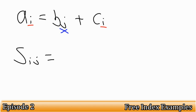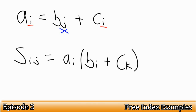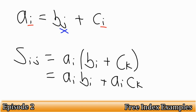S_ij = a_i(b_i + c_k) — this also makes no sense. When we expand the brackets, we get a_i*b_i + a_i*c_k, where i appears twice in one term but appears once in the other two. What other faults can you spot with this equation? There are two more to spot.